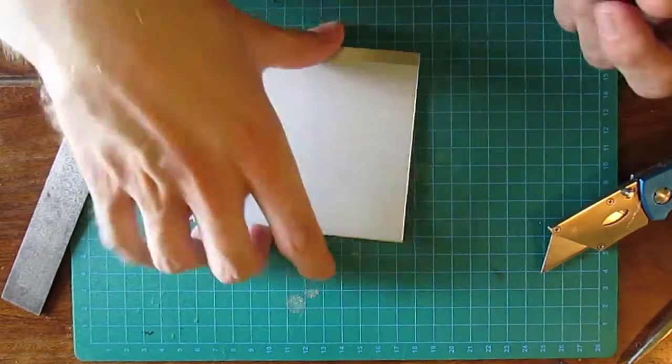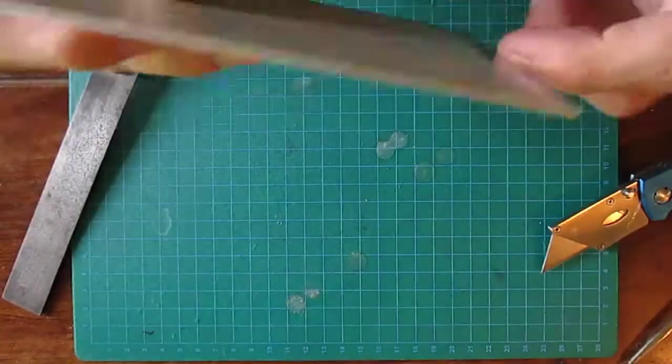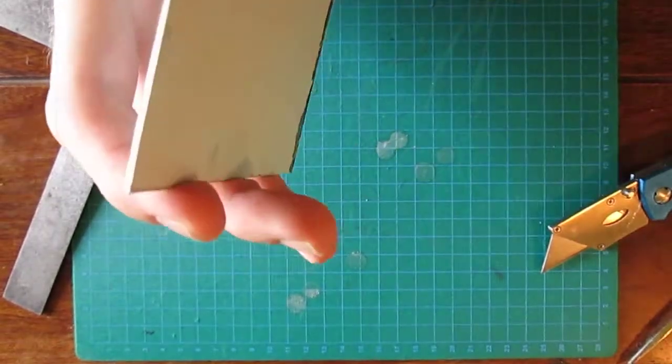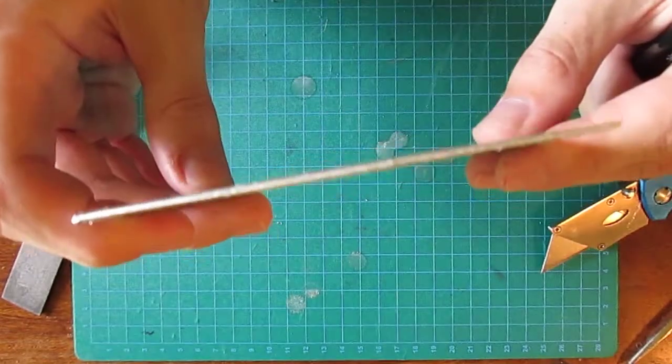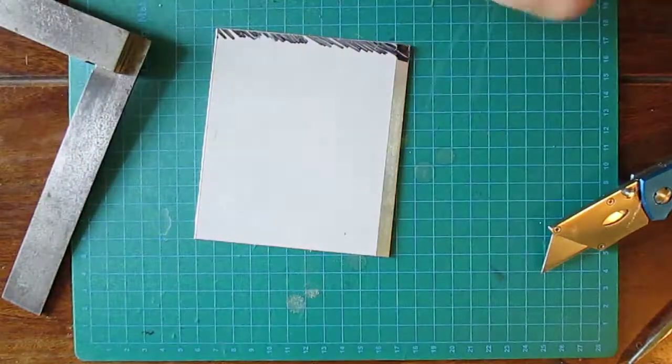So say we wanted, this is regular sheet aluminum stock, 1.5mm or so, and let's say we wanted a 2cm slice of that.